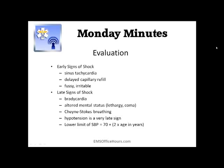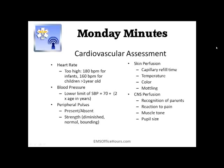The goal is to stay ahead of the curve and not reach lethargy, unresponsiveness, or severe hypotension — all very late signs in the pediatric patient. The lower limit of systolic blood pressure in pediatrics is normally 70 plus two times the patient's age in years. For heart rate, too high is usually about 180 beats per minute for infants and about 160 beats per minute for children greater than one year of age. Check peripheral pulses — are they there, are they weak or thready, normal, or bounding?